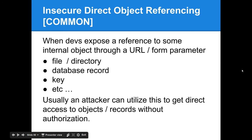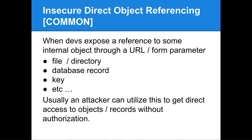Insecure direct object referencing has overlap with security misconfiguration. It occurs when developers expose a reference to some internal object through a URL, form, or parameter — this may be a file, a directory, database records, or keys. In these cases, an attacker can typically use this vulnerability to access other records or objects without authorization.